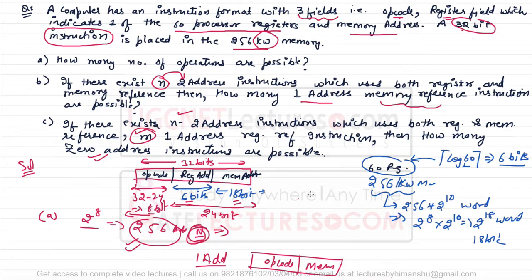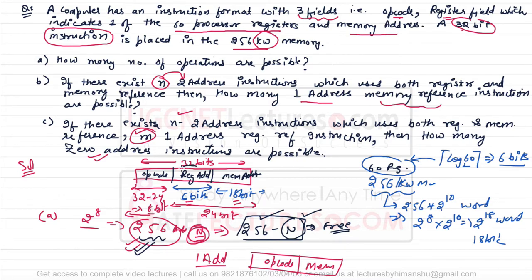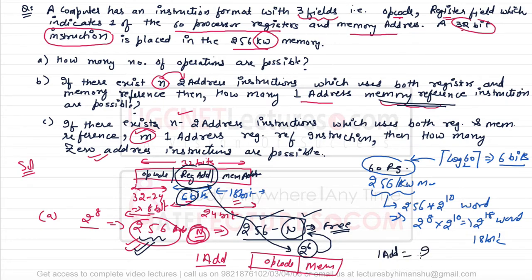If there are n two-address instructions and the total possible was 256, then the number of free opcode combinations is 256 minus n. These free combinations pair with the 6 register bits that become free when using a memory-only reference instruction. So the number of one-address instructions possible is (256 − n) × 2^6.